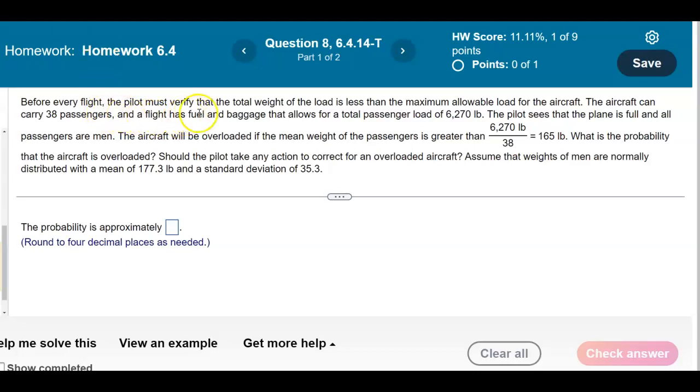Before every flight, the pilot must verify that the total weight of the load is less than the maximum allowable load for the aircraft. The aircraft can carry 38 passengers, and a flight has fuel and baggage that allows for a total passenger load of 6,270 pounds. The aircraft will be overloaded if the mean weight of the passengers is greater than 6,270 pounds divided by 38, which is equal to 165 pounds.